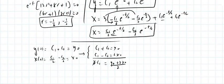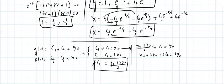Adding those, 2c1 equals y naught plus 2x naught, so c1 equals (2x naught plus y naught) divided by 2. Substituting into the first equation, c2 equals (y naught minus 2x naught) divided by 2.